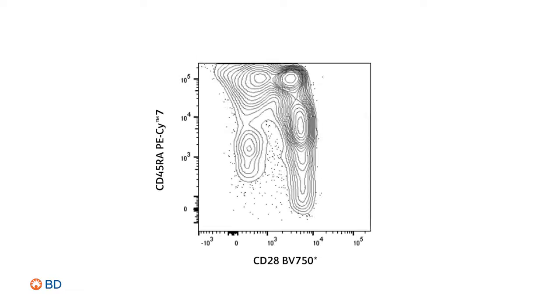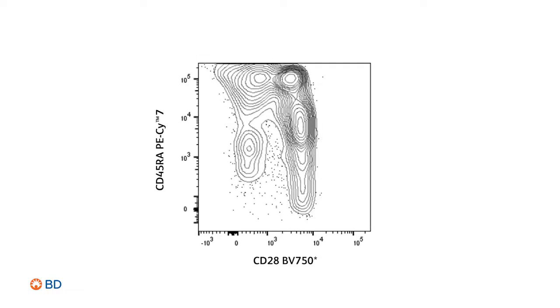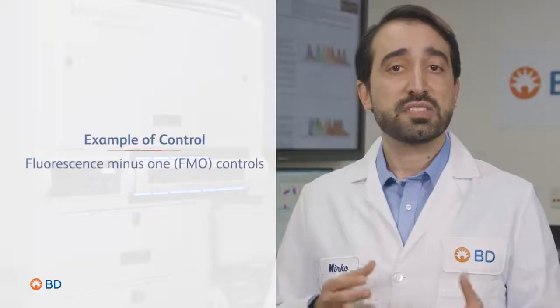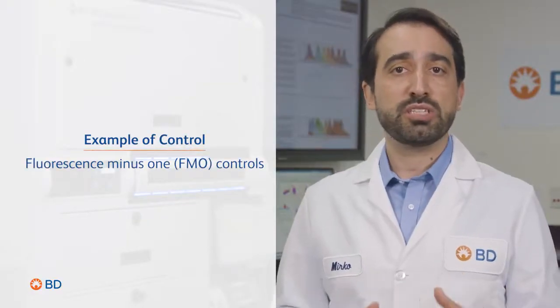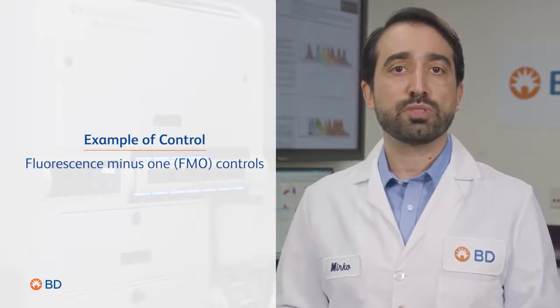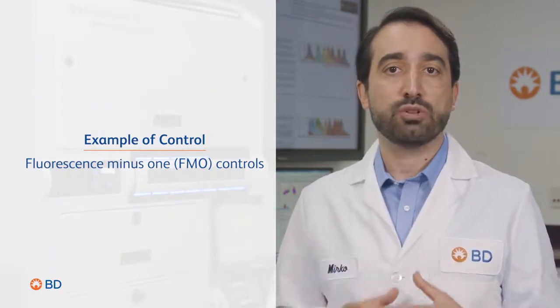However, if you observe merging of positive and negative populations or inability to draw a clear gate around the population of interest, this may indicate loss of resolution due to suboptimal panel design. This could result from the use of two dim fluorochromes or from the introduction of too much spread. In this scenario, proper controls are critical to identify which fluorochromes are impacting your resolution.